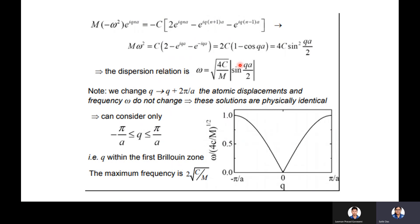The dispersion relation is ω = √(4C/M)·|sin(qa/2)|. If we change q to q + 2π/a, the frequency value does not change — the solution is physically identical. So we can restrict q within the range −π/a to +π/a, which is the first Brillouin zone. The maximum frequency occurs when sin(qa/2) = 1, giving ω_max = 2√(C/M).